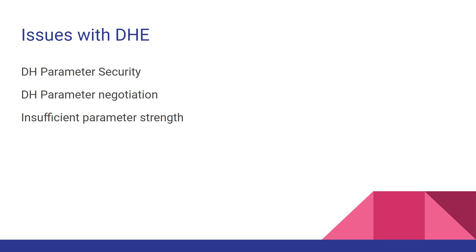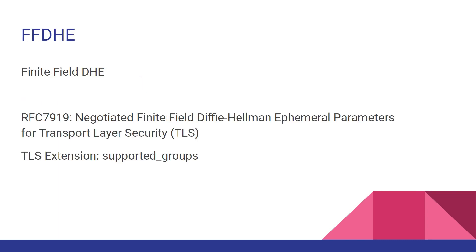Earlier I told you there are some issues with Diffie-Hellman ephemeral key exchange — the parameters we use have to be very strong. The common person doesn't know how to verify this; we need the help of a cryptographer to certify that the parameters are strong. So instead of using random parameters, cryptographers have already pre-calculated certain parameters which they consider very safe to use. Those parameters are called named groups. There is a new standard called RFC 7919, which is called Negotiated Finite Field Diffie-Hellman Ephemeral Parameters, or FFDHE.